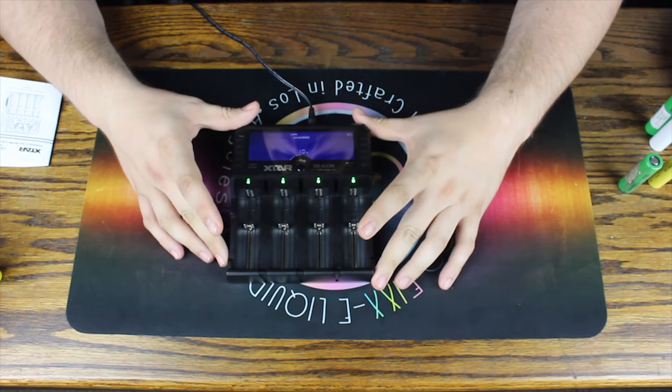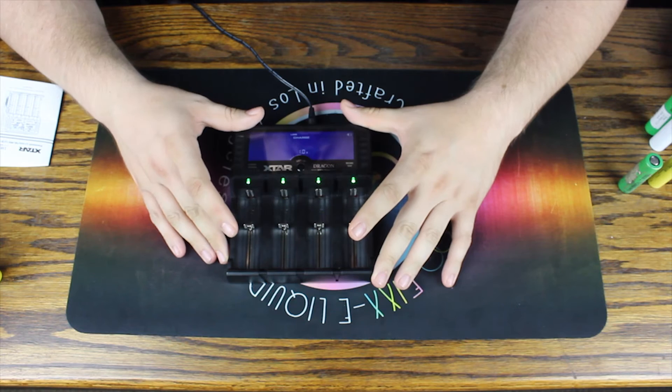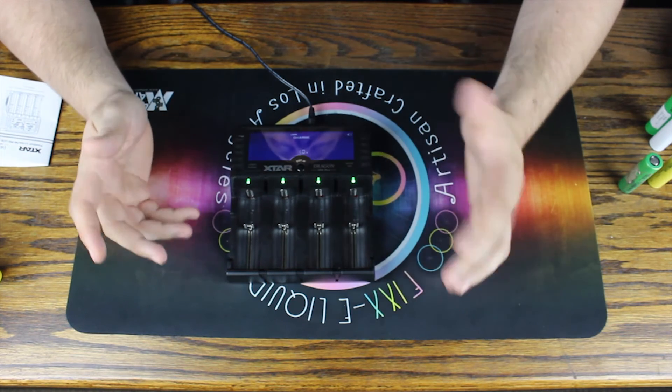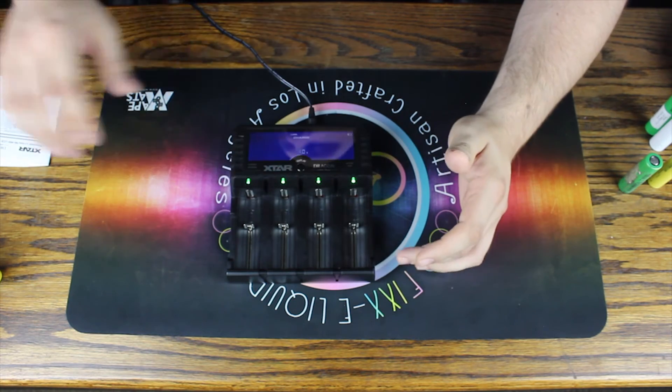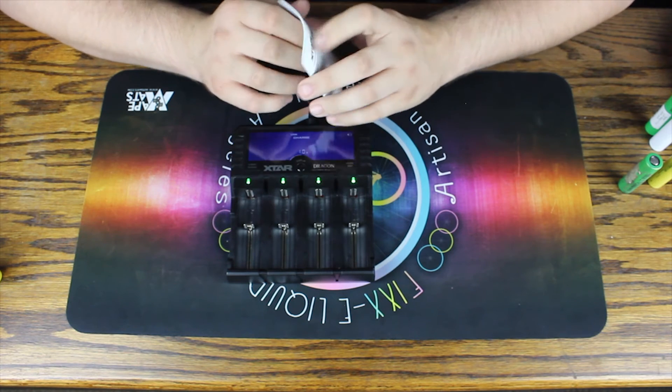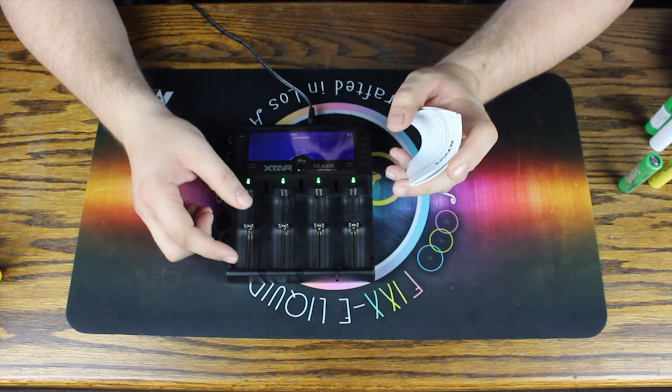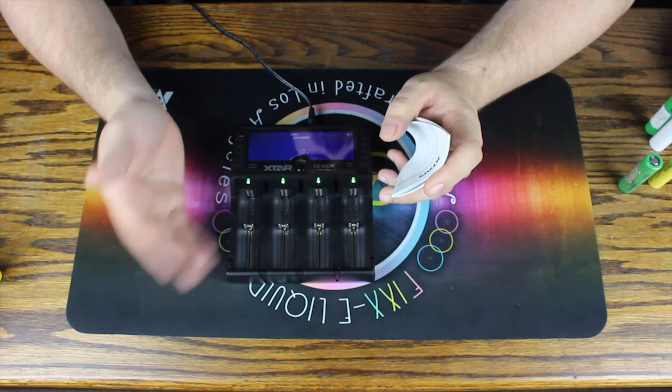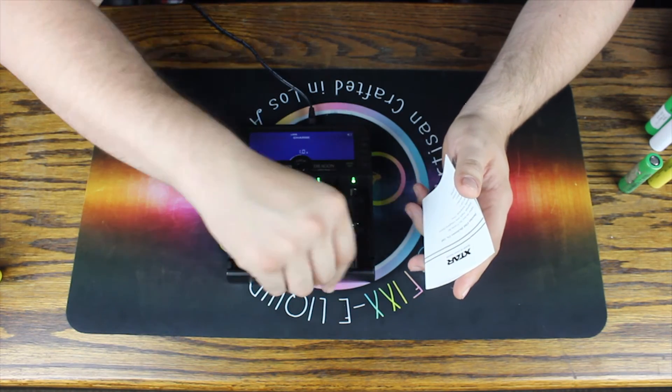This battery charger also does have a rescue function as well. You just put your battery on here, and I think we had some down around the 2.5 area, which is very very over-discharged. Put it on here and what it'll do is it will charge it slow until it gets up into a regular voltage and then it'll keep going from there until it is fixed.